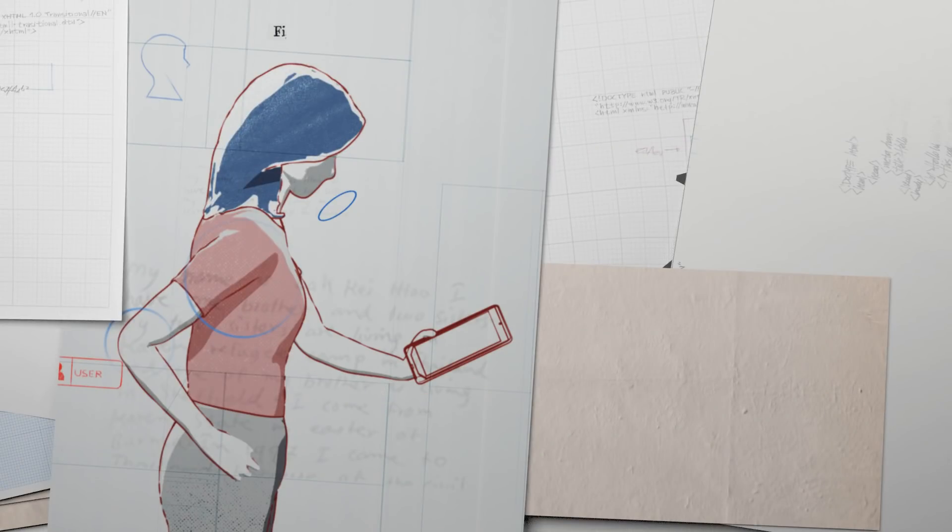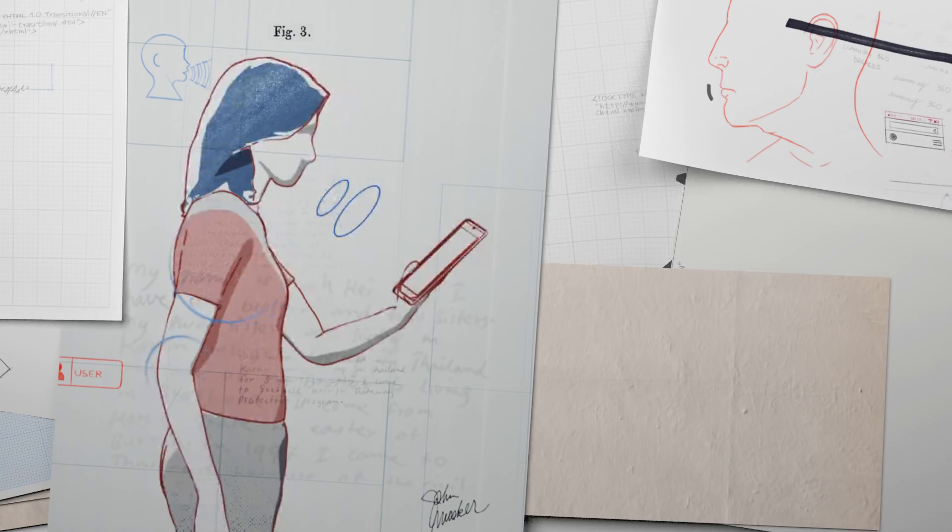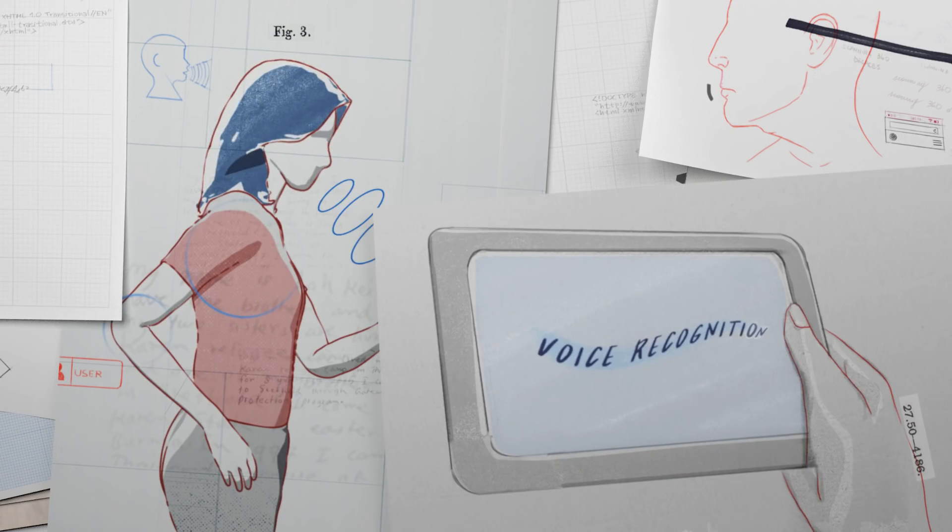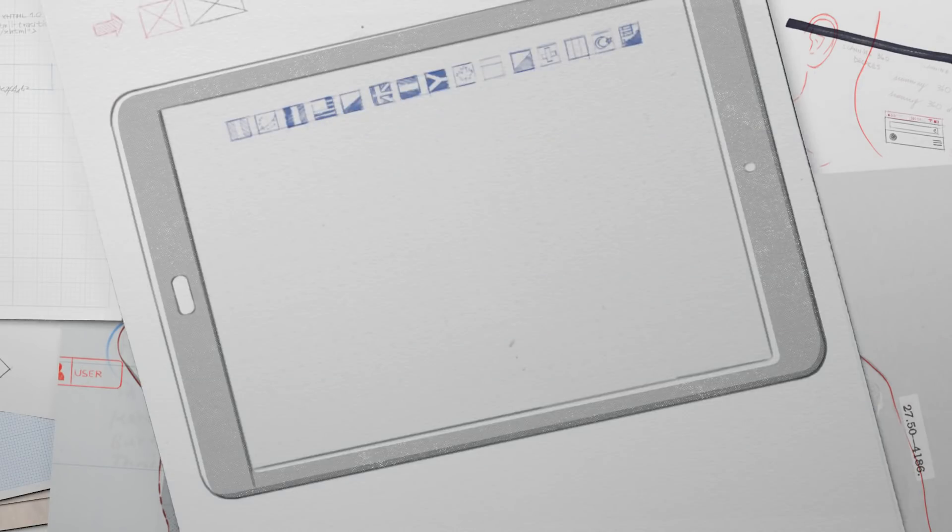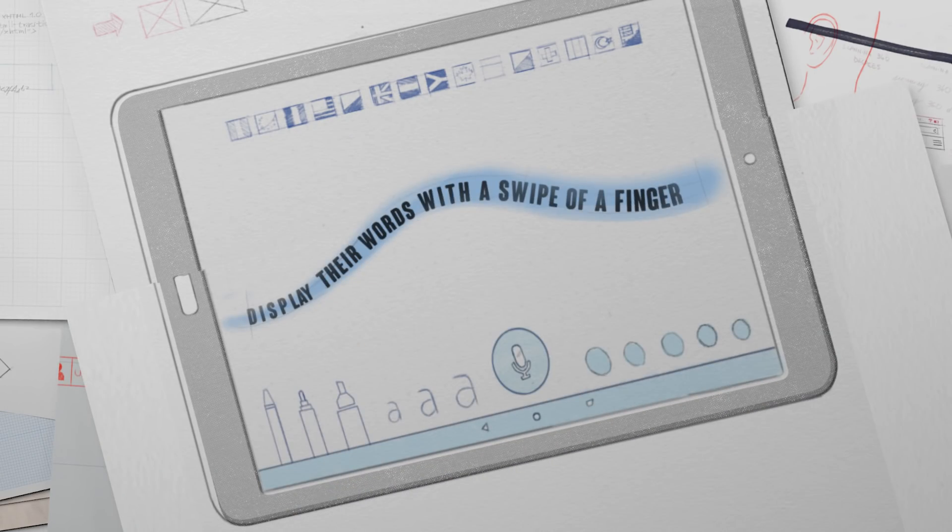It uses a touch screen to display spoken words. Using technology that recognizes a voice and turns it into writing, a person can speak into a tablet and display their words with a swipe of a finger.